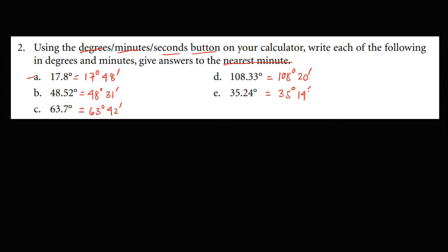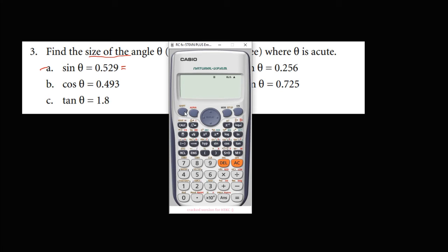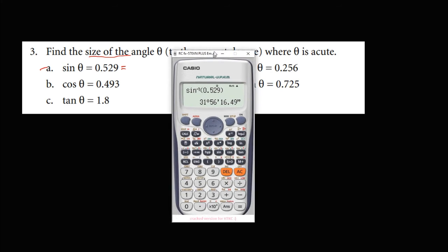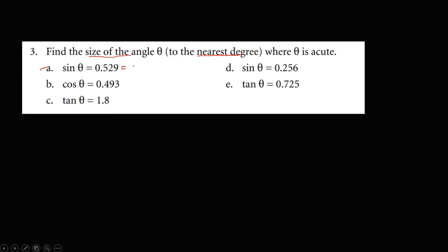Now find the size of angle theta to the nearest degree. For sine theta equals 0.529, we use inverse sine (shift sine) of 0.529. That gives 31 degrees and 56 minutes. Since 56 minutes is more than 30 minutes, 31 degrees rounds up to 32 degrees.